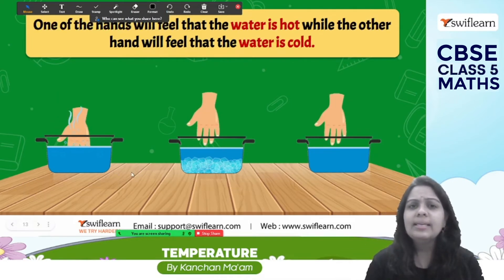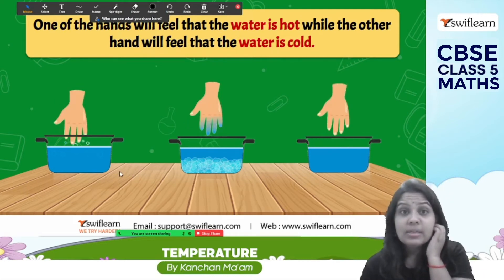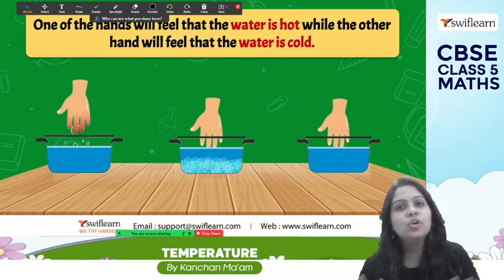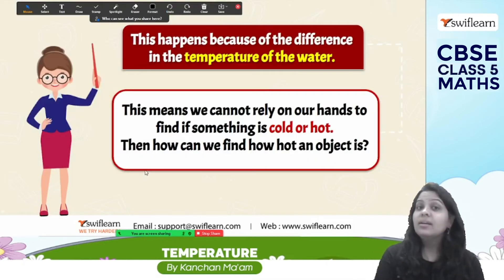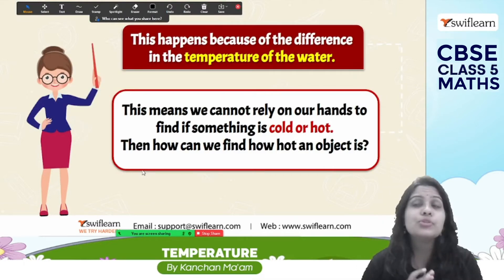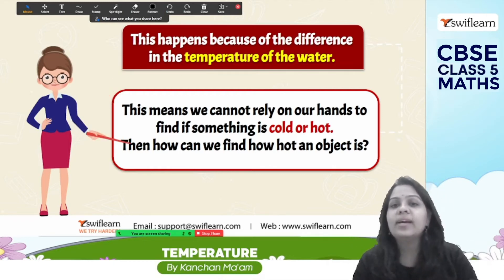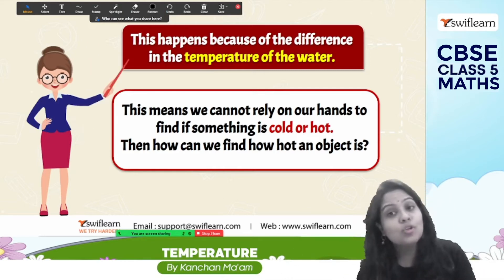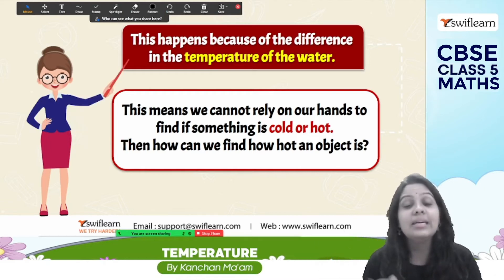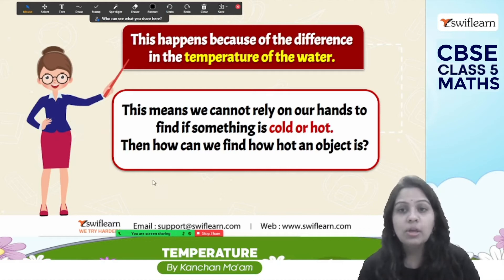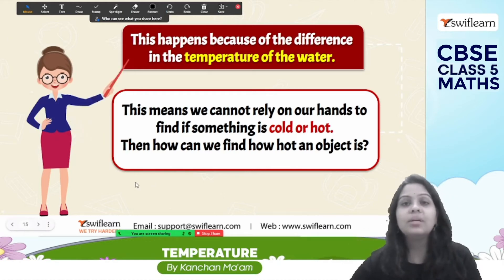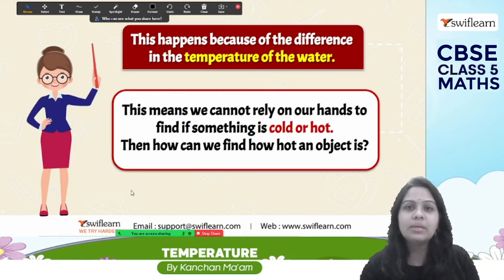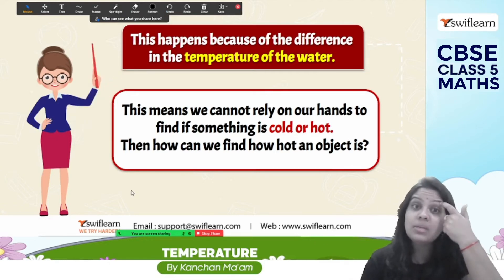So the sense of touch can tell us whether water is hot, warm, or cold. But this happens because of the difference in temperature of the water. However, we cannot fully rely on our hands to accurately determine how hot or cold something is. We can say it is warm or cold, but we cannot say precisely how warm or how cold it is — so touch alone is not reliable.